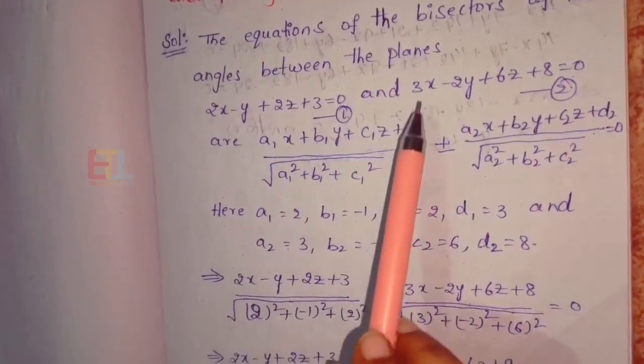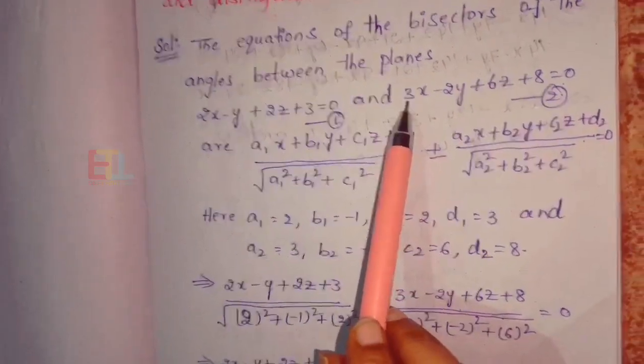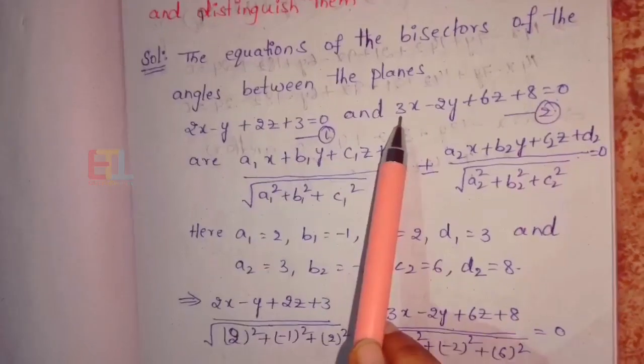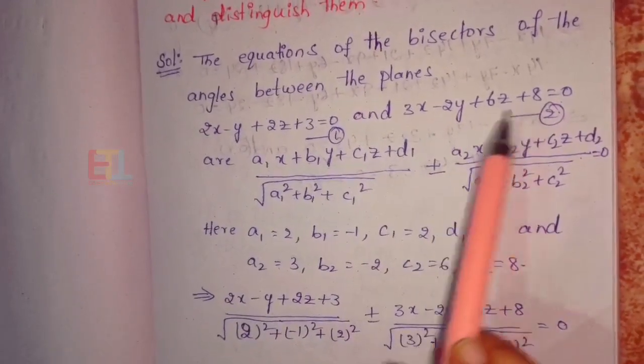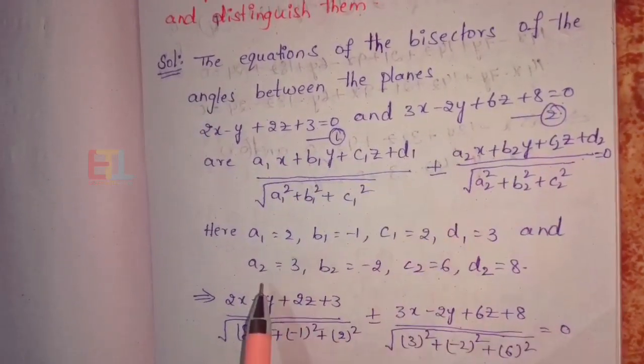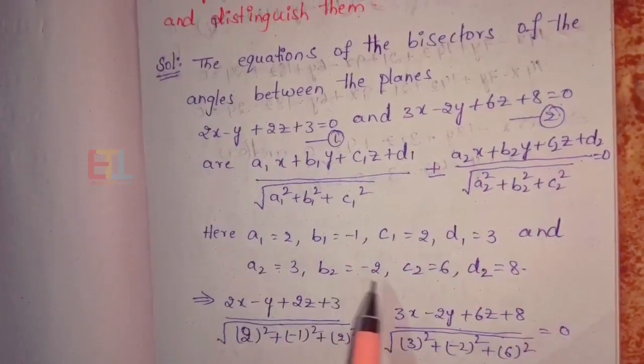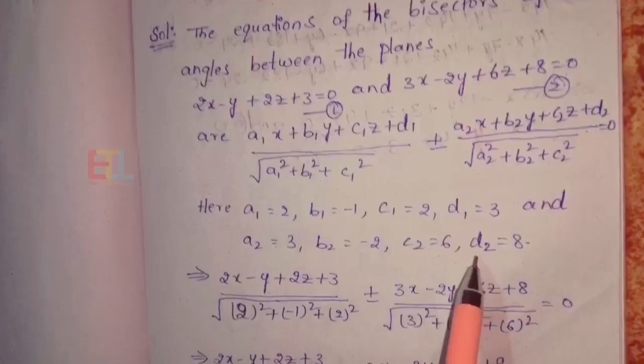A2 is the second plane's coefficient — same approach. We identify A2, B2, C2, D2 from the second plane equation.